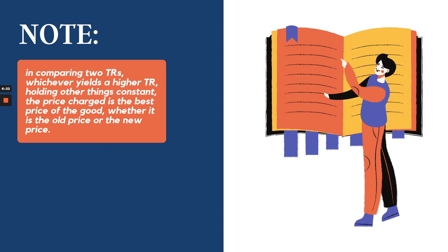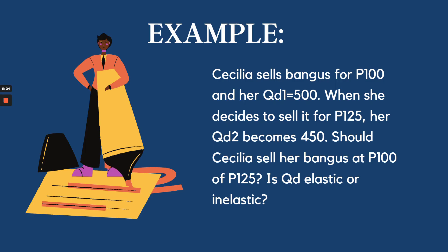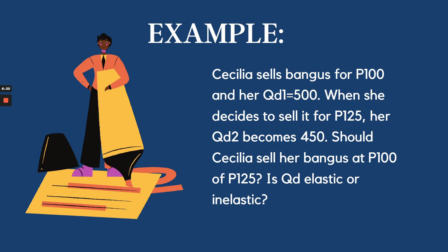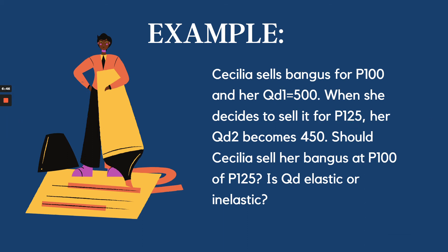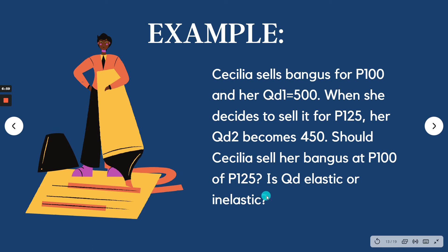Let's apply this. Cecilia sells bangus for 100 pesos, and her quantity demanded is 500 pieces. When she decides to sell at 125 pesos, the quantity demanded becomes 450 pieces. The question is: should Cecilia sell her bangus at 100 or 125 pesos?